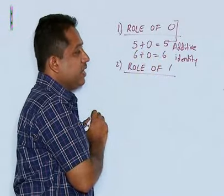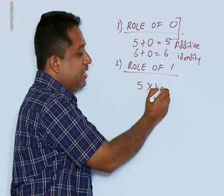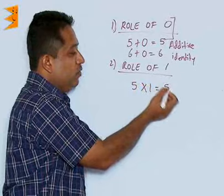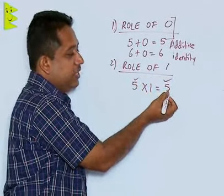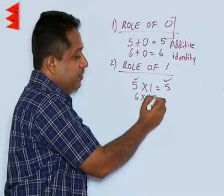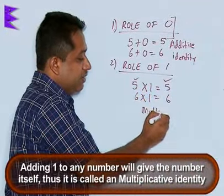But when we look at 1, if I multiply 1 with any number, then I get the number itself. 5 into 1 is 5. So we find when multiplying 5 with 1, we get the number. 6 into 1, we are getting the number. So 1 is called the multiplicative identity.